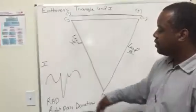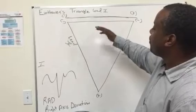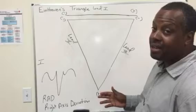So if you see that lead 1, right axis deviation, we know that the right ventricle has enlarged. But this is the gist of Einthoven's Triangle. So if you're taking an ECG course, I'm trying to make it as easy to understand as possible.